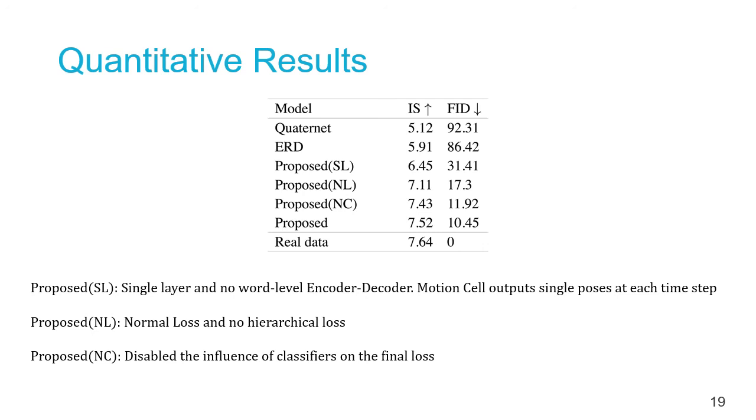Quadernet and ERD generate convincing walking and jogging samples. However, since the only source of stochasticity is in the initial hidden states, these models fail to generate a diverse set of sequences. In addition, they usually did not do particularly well on sequences with non-periodic motion and showed early regression to the mean.